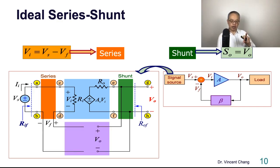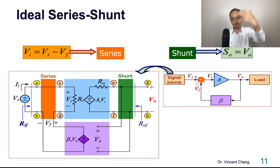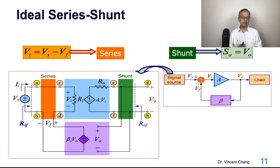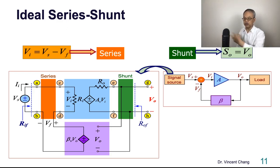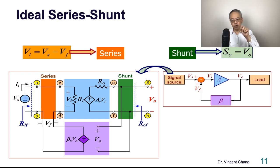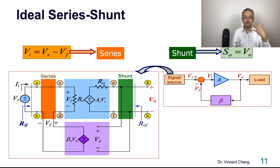The sample voltage on the right-hand side of the feedback network is Vo, going through reverse transmission via another voltage-controlled voltage source: beta times Vo. Beta represents the feedback factor — the reverse transmission factor. The blue network is responsible for the forward transmission, and the purple network is responsible for the reverse transmission. So Vf equals beta-V times Vo; the subscript V for beta indicates the nature of the feedback factor — voltage in and voltage out.